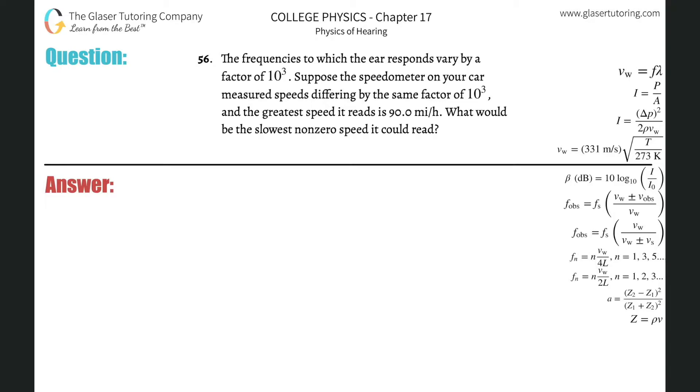Number 56. The frequencies to which the ear responds vary by a factor of 10 to the third. Suppose the speedometer in your car measured speeds differing by the same factor of 10 to the third, and the greatest speed it reads is 90 miles per hour. What would be the slowest non-zero speed it could read?